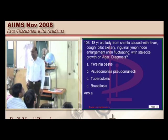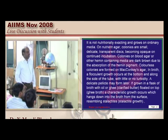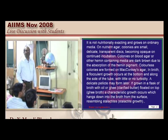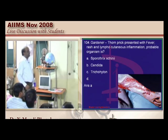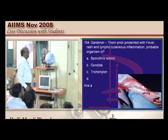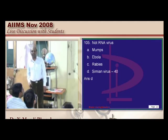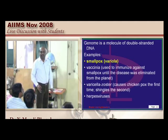Stalactite growth on agar is your favorite question. Yersinia pestis typically creates a stalactite growth on ghee broth culture. For the gardener with thorn prick, Sporothrix is going to be your answer. You also need to know RNA versus DNA viruses.